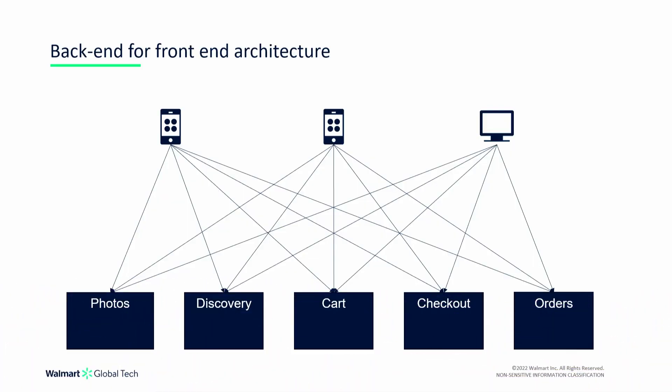The services architecture was pretty contentious, and we narrowed it down to two different architectures. One was the back-end for front-end architecture, which mimicked what we already had. We would be rebuilding it, so we wouldn't be reusing anything. We could use GraphQL for these as standalone GraphQL services, but it was going to follow this more BFF architecture.